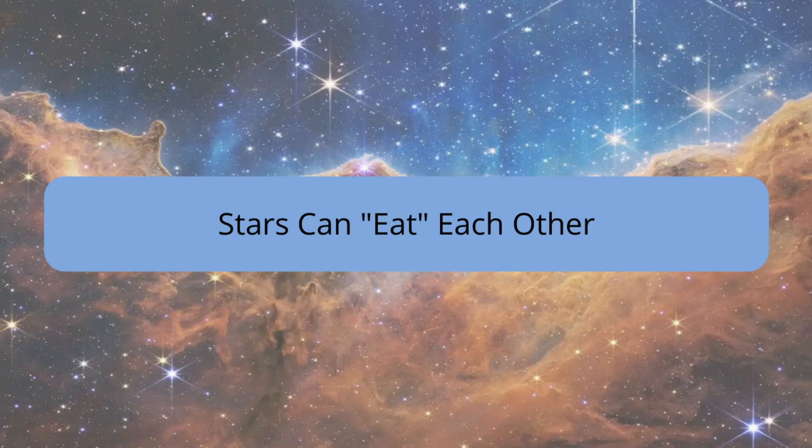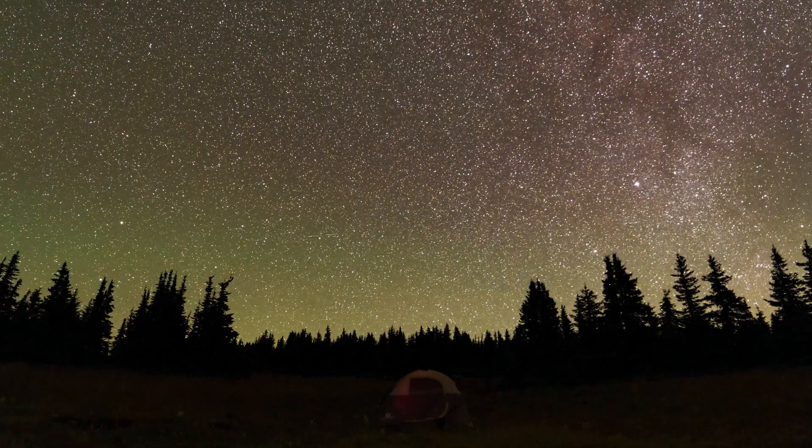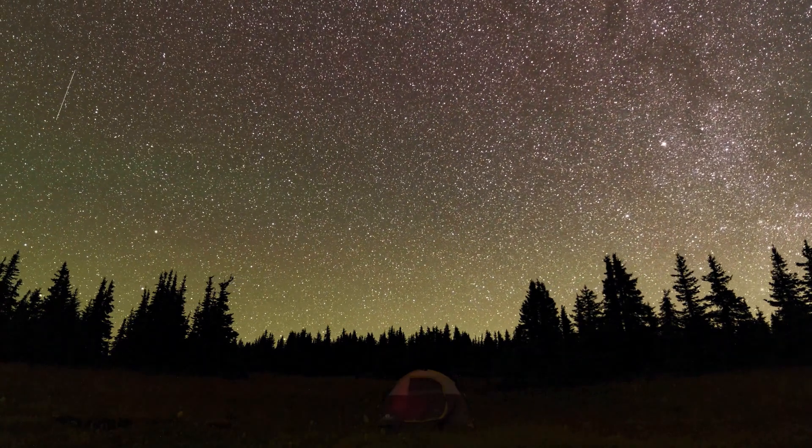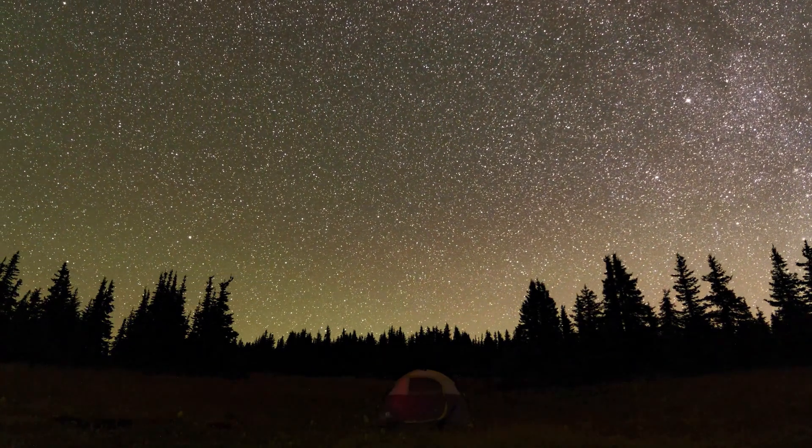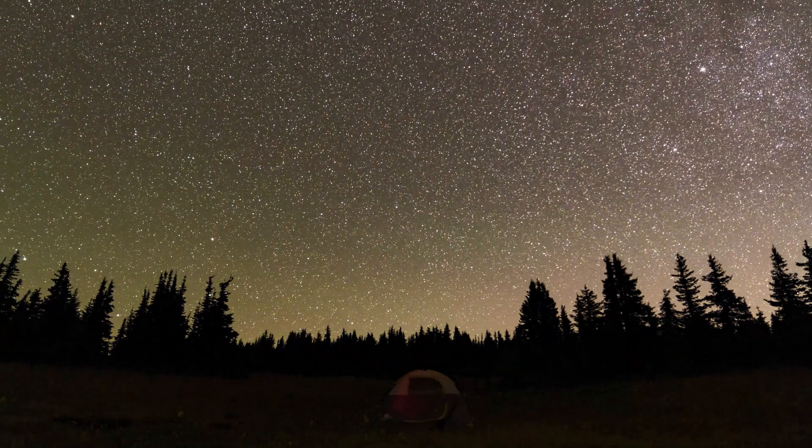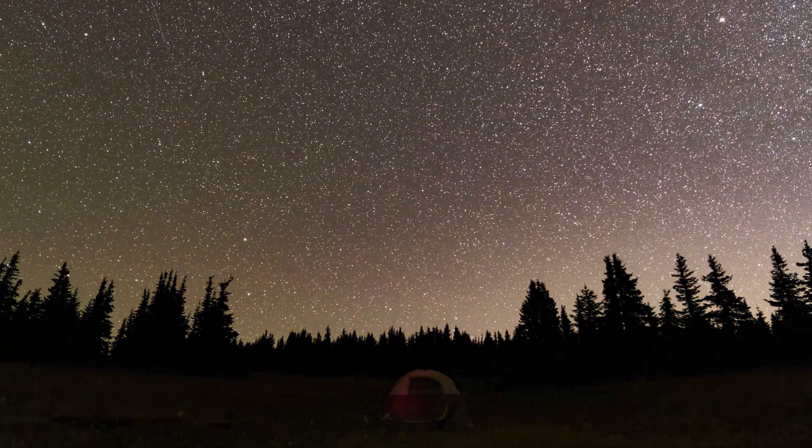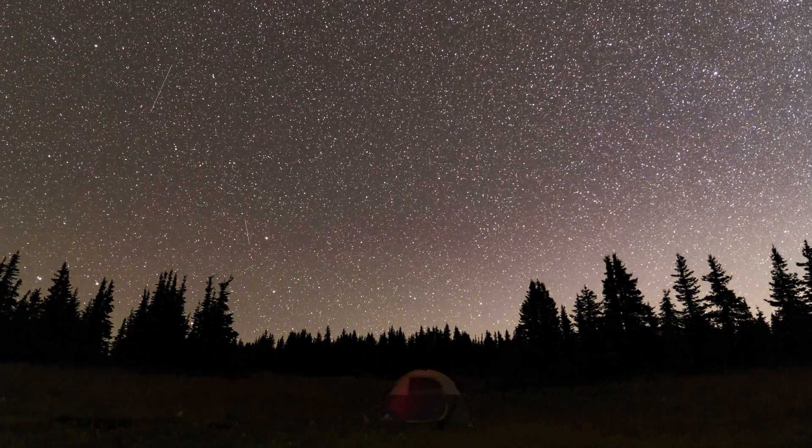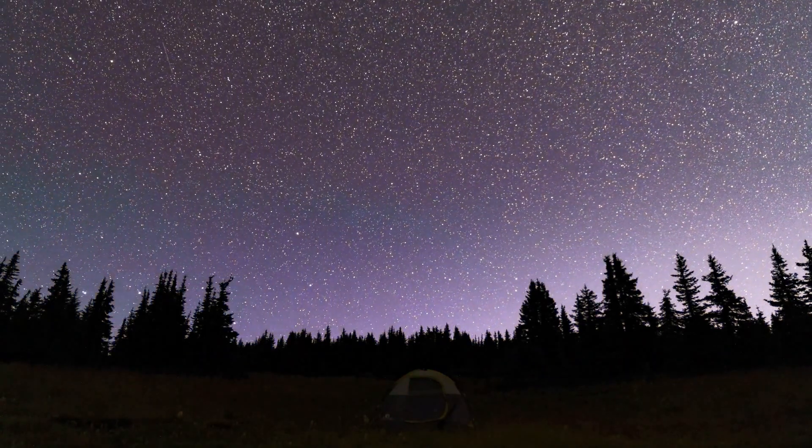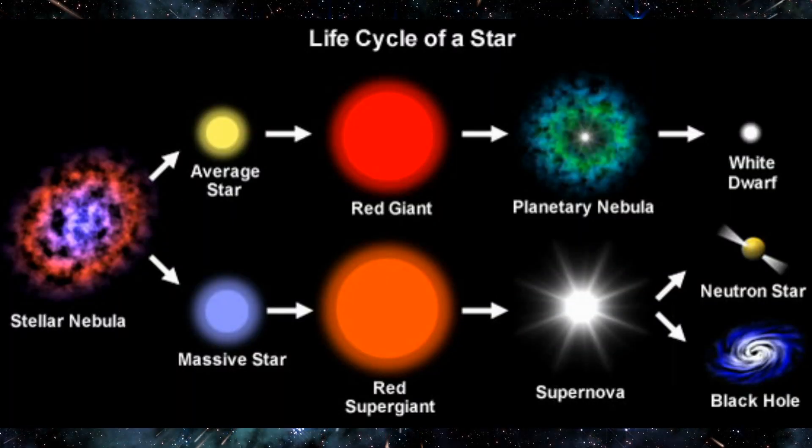It's shocking, but stars can eat each other. Stars aren't always solitary giants; sometimes they become cosmic cannibals. Here's how stars can devour each other. This phenomenon occurs in binary star systems where two stars are gravitationally bound and orbit each other. It all depends on the stars' lifespans. Stars with different masses have varying lifespans. A more massive star burns its fuel faster and reaches the end of its main sequence life, hydrogen fusion stage, earlier than its companion.